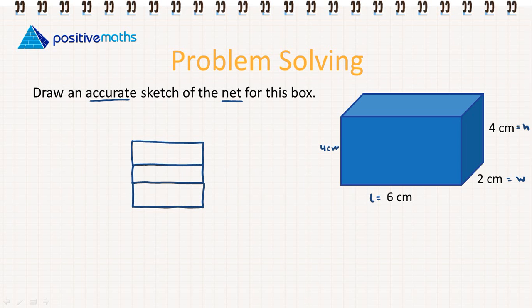Now the sides at the ends. So these are 2 centimeters by 4 centimeters and the last thing that we can't forget is the top of the box.